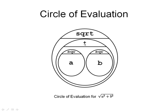And both of those are operands of the plus operator, so this circle computes a squared plus b squared. And all of that, in turn, is within a circle with a square root operator. So the whole circle is the circle of evaluation for the square root of a squared plus b squared.